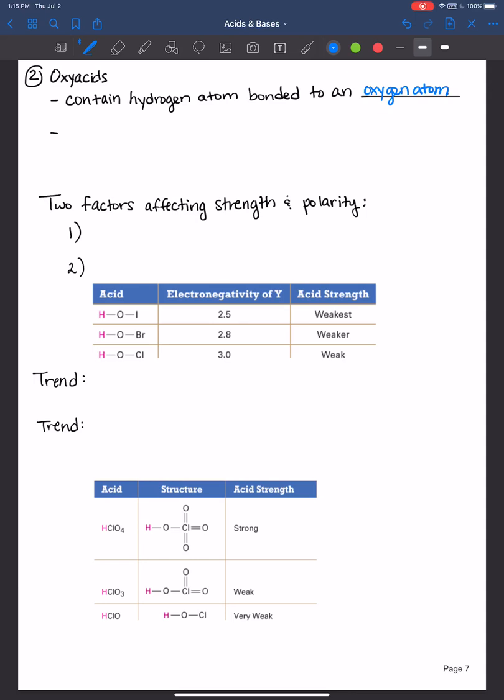As the name suggests, oxyacids contain a hydrogen atom bonded to an oxygen atom, and then that oxygen atom is bonded to another atom. The structure looks something like this where you have the acidic hydrogen attached directly to an oxygen, and then that oxygen is attached to another atom.